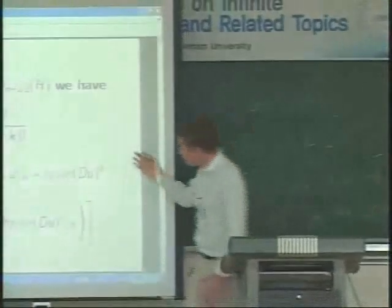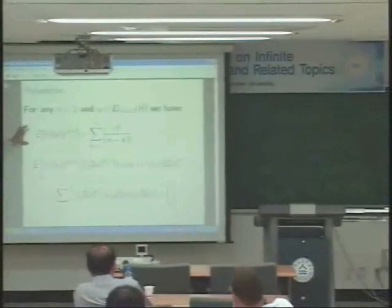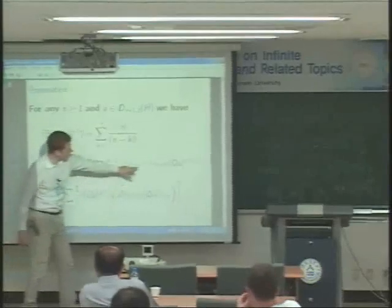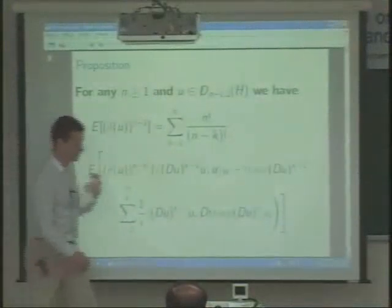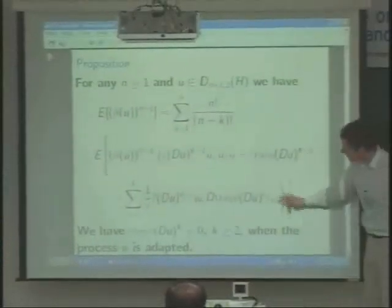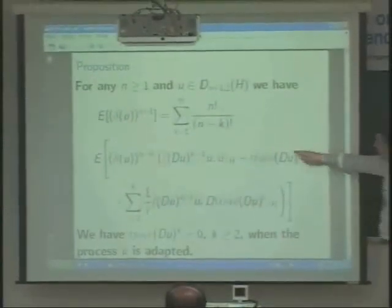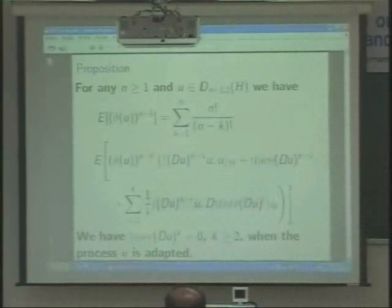This kind of result is nice because the moments of the Gaussian law can be characterized using a well-known induction relation. When the trace terms are zero, we get rid of certain terms, and we hope the remaining terms will give the correct induction relation. So what we want is to get rid of those two terms, which will be true as soon as the trace condition is satisfied. Then we focus on the first term and expect it to give the correct induction relation.